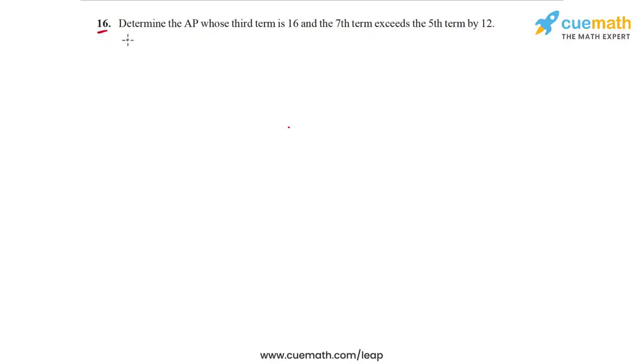In question 16, the problem statement says determine the AP whose third term is 16 and the seventh term exceeds the fifth term by 12.